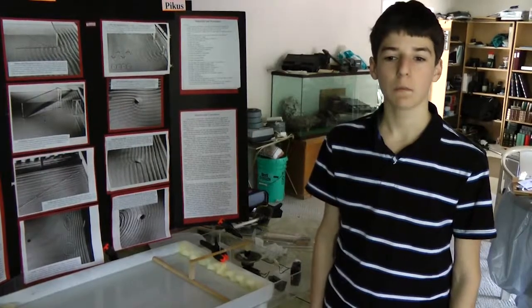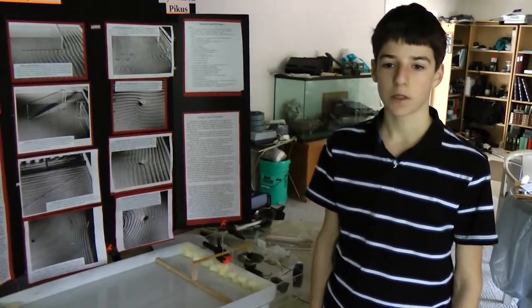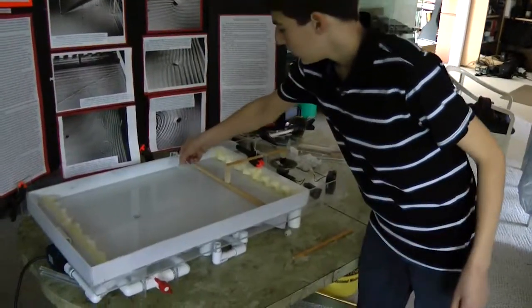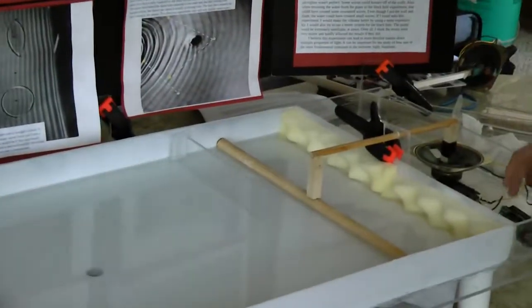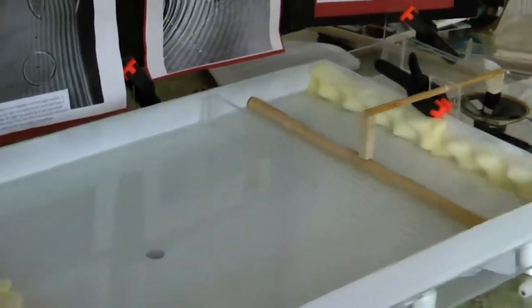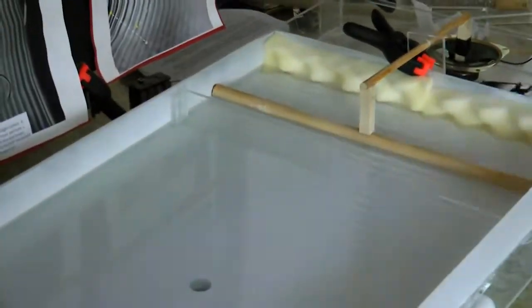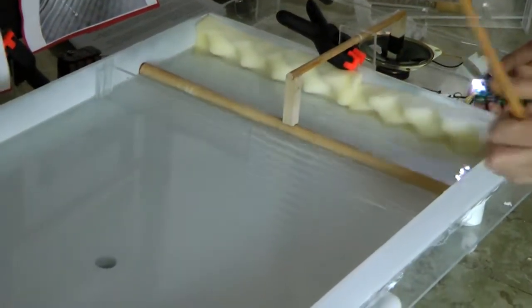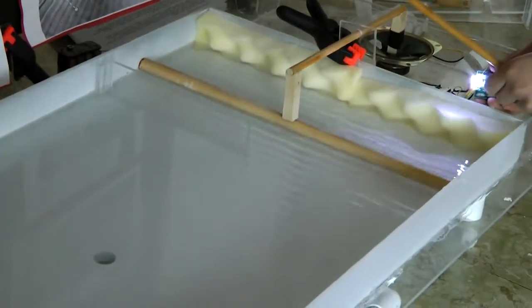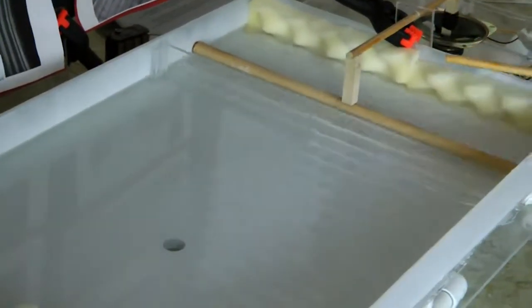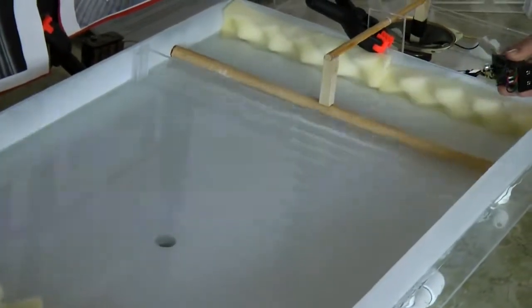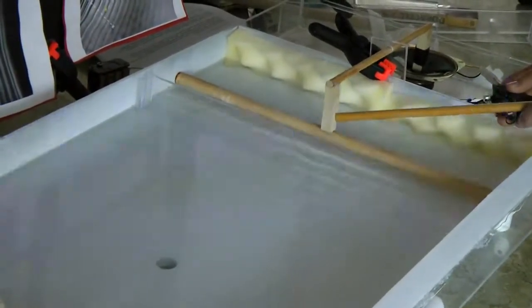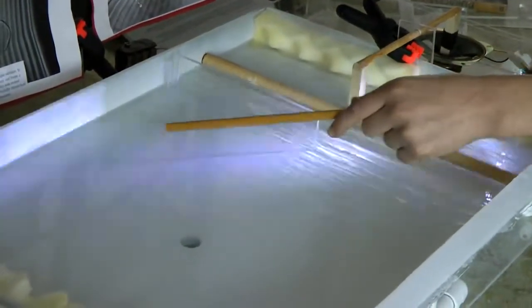The simplest geometrical optical effect that we can demonstrate is a shadow. Here we set up a barrier to block part of the wave. Behind the barrier, there is a shadow, which means no waves. Now at a higher frequency, the shadow is not perfect — the waves bend around the corner and there are some waves in the shadow region. This optical effect is called diffraction.